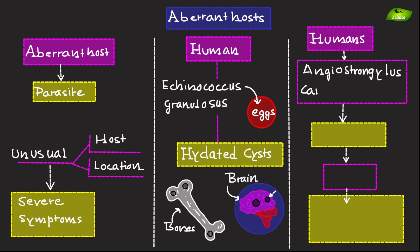Second example is humans for Angiostrongylus cantonensis. This rat lungworm usually infects rats but can cause severe neurological symptoms in humans who become aberrant hosts.